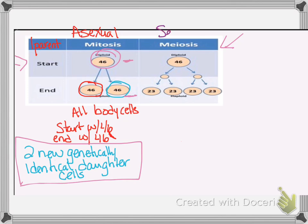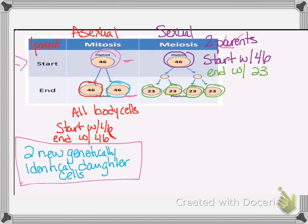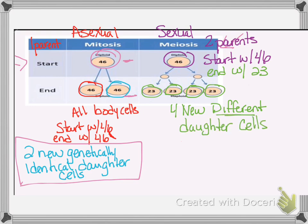Now, meiosis. Meiosis is a type of sexual reproduction. It requires two parents. You start with 46 and end with 23. You get four new different daughter cells. Remember, we want variation here.